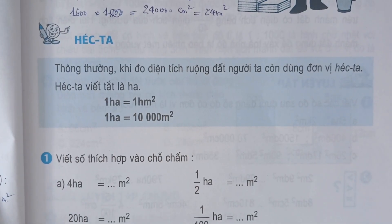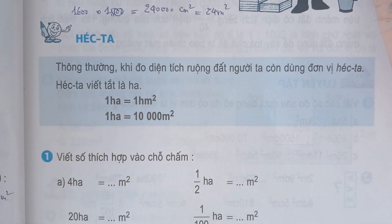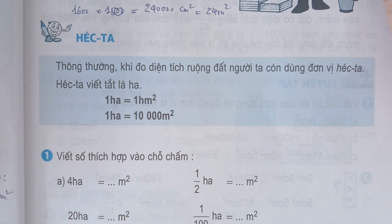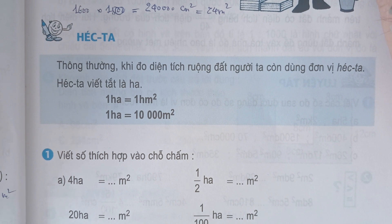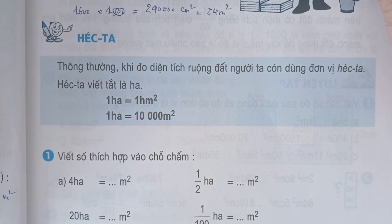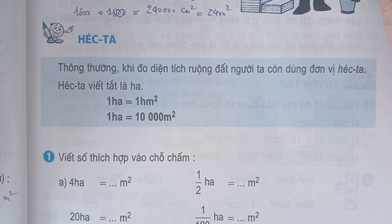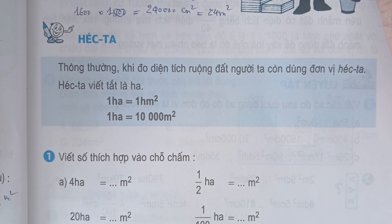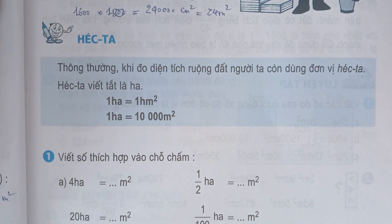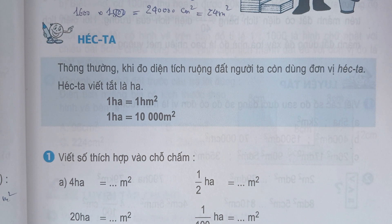Xin chào tất cả các bạn và các con sinh lớp 5 nha. Các con sinh lớp 5 thân mến, hôm nay chúng ta sẽ học bài NETA. Trong sách giáo khoa lớp 5, thông thường khi đo diện tích ruộng đất, người ta còn dùng đơn vị NETA. NETA viết tắt là HA, gọi là HA.